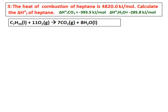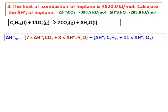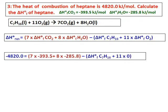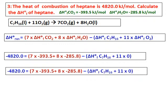The heat of combustion of heptane is 4820 kJ/mol. Calculate the heat of formation of heptane, given the enthalpies of formation of CO₂ and water and the balanced combustion equation. Write the equation delta H° reaction equals products minus reactants. Multiply the enthalpy of formation of CO₂ by 7 and water by 8; oxygen's enthalpy of formation is zero. The heat of formation of heptane C₇H₁₆ is the unknown — substitute all other values and solve.